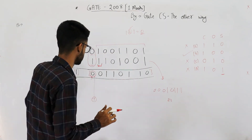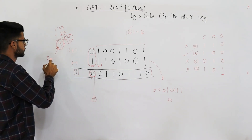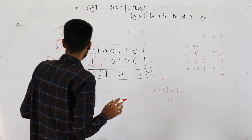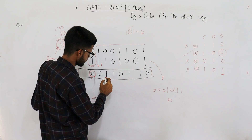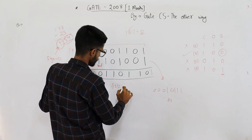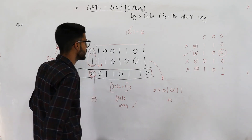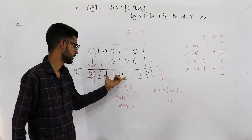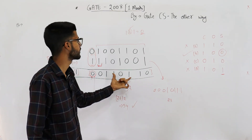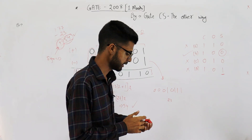Let's check if the result is indeed 54. If it comes out to 54, we can be sure our addition is correct, and we can also verify from the result that the sign bit is 0. The value represented by this combination of bits is 54, so our result is verified. To learn how to convert these binary combinations to decimal values, you can watch my digital logic videos already uploaded on my main channel.